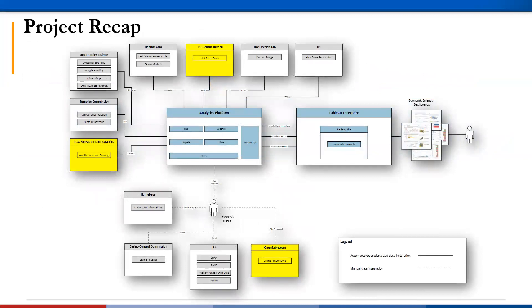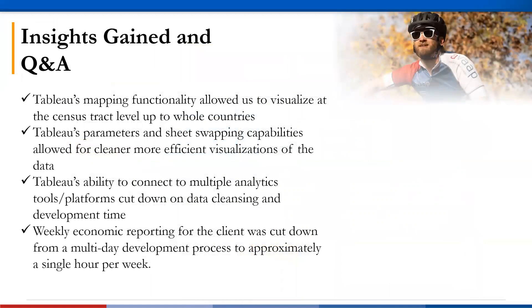For a quick project recap, as you can see in our project diagram, we have other data sources and dashboards we were able to drive insights from. Some examples include data on small business revenues, eviction filings, and consumer spending. All these data sources allowed the Office of Budget and Management to make insights and drive policy decisions around how state citizens and businesses were performing in the face of the COVID pandemic. Tableau's mapping functionality allowed us to visualize at the census tract level up to whole countries. Tableau's parameters and sheet swapping capabilities allowed for cleaner, more efficient visualizations of the data. Tableau's ability to connect to multiple analytics tools and platforms cut down on data cleansing and development time. Weekly economic reporting for our client was cut down from a multi-day development process to approximately a single hour per week.